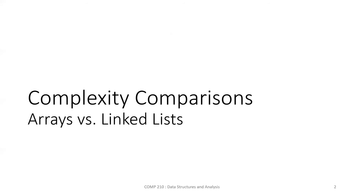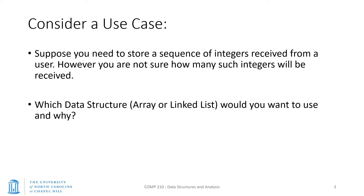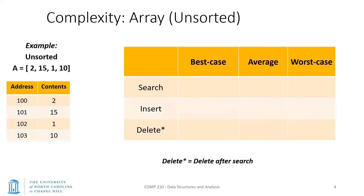Complexity comes in when you're talking about questions like this: let's say you want to store a bunch of numbers — registering new students, for example. You don't know how many students are going to show up, so you don't have a good idea of the size of the array to allocate. The question is: which data structure would you want to use — a static array versus a linked list? An analysis of complexity should give you a better idea of how to answer such questions.